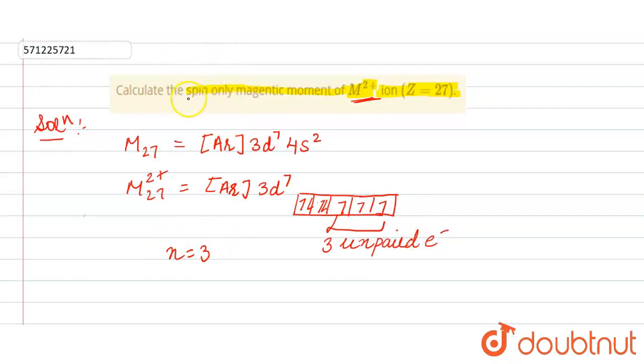In this question, we need to calculate the spin-only magnetic moment of M²⁺. The formula for spin-only magnetic moment is √(n(n+2)).